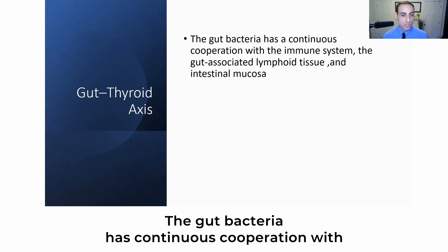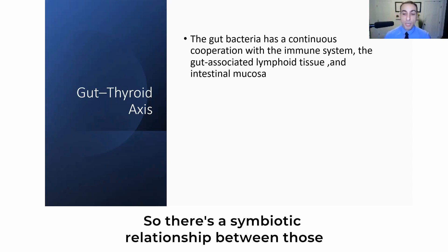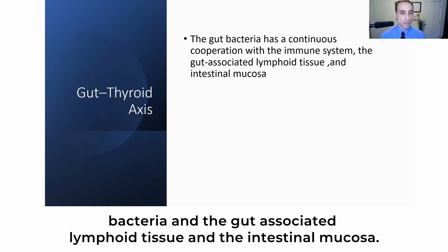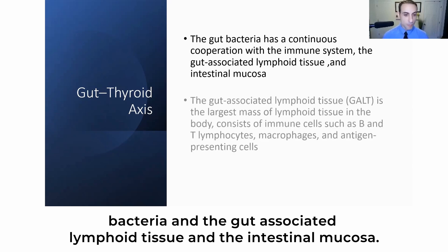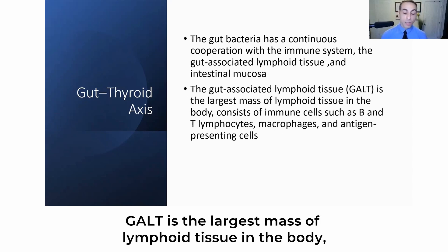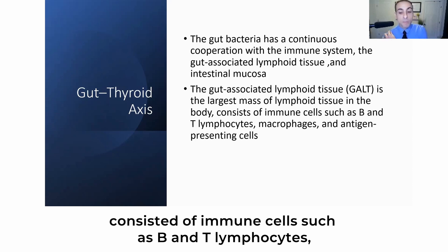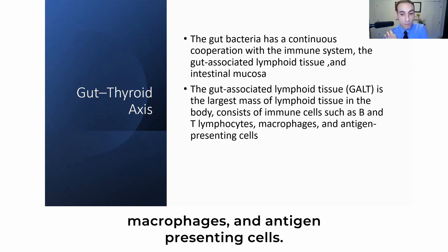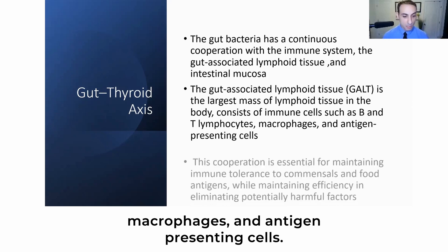The gut bacteria has continuous cooperation with the immune system, so there's a symbiotic relationship between those bacteria and the gut-associated lymphoid tissue and the intestinal mucosa. The gut-associated lymphoid tissue, or GALT, is the largest mass of lymphoid tissue in the body, consisting of immune cells such as B and T lymphocytes, microfold cells, and antigen-presenting cells.